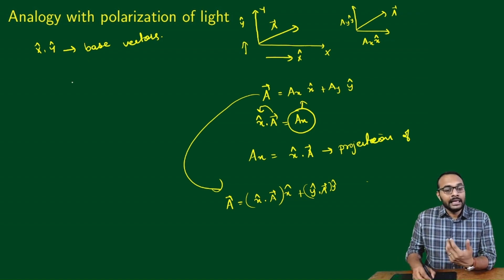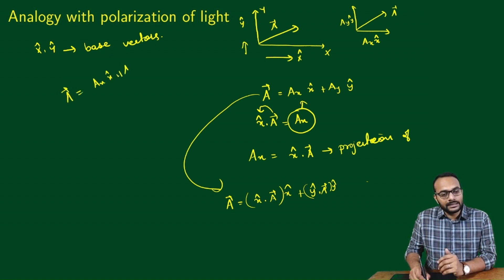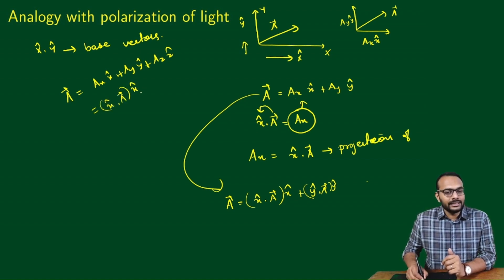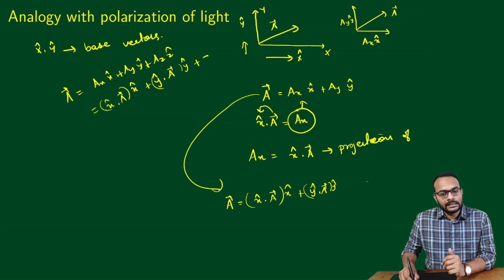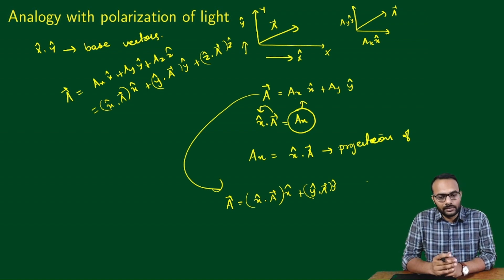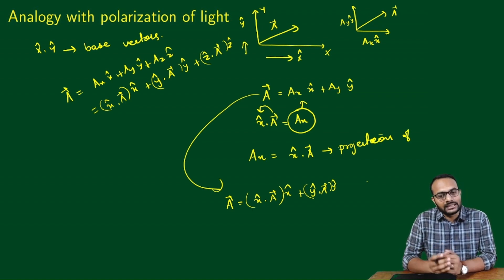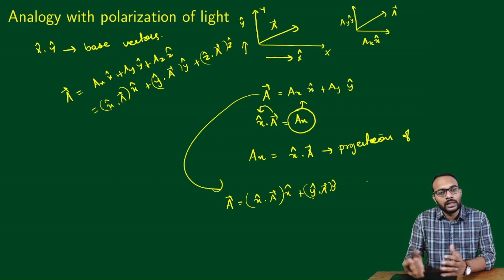We live in a three-dimensional space. In three dimensions, we write vector A as AX X̂ + AY Ŷ + AZ Ẑ, or equivalently as (X̂ · A)X̂ + (Ŷ · A)Ŷ + (Ẑ · A)Ẑ. This logic can work for any number of dimensions — the basic logic can be extended to any number of dimensions.